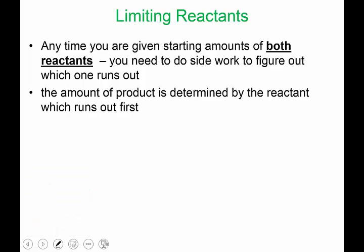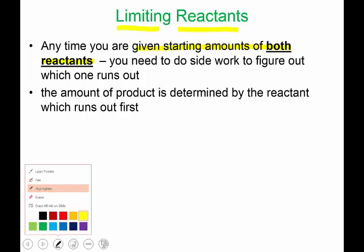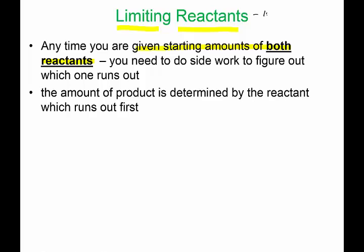Pay attention very closely when you're reading a chemistry problem — if you're given starting amounts of both reactants, like 5 grams of oxygen and 5 grams of methane gas, you have to figure out which one of those reactants is going to run out. That determines how much product you can form. That's why it's called the limiting reactant — it limits how much product forms.